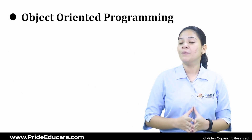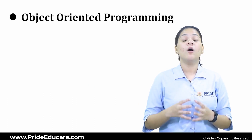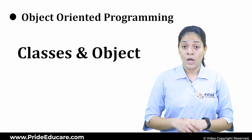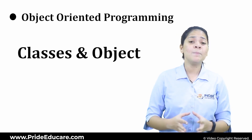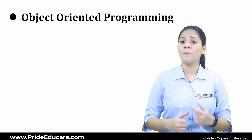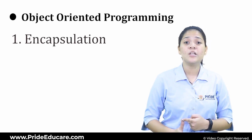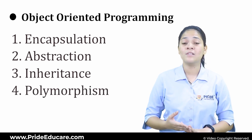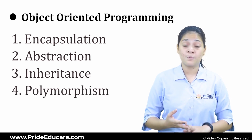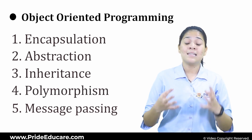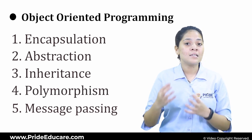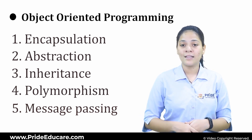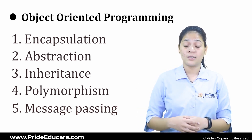Object oriented programming always works on something called a class and an object. It has many properties like encapsulation, data abstraction, inheritance, polymorphism, message passing, etc. These are the concepts that we are going to learn slowly in the next few sessions.